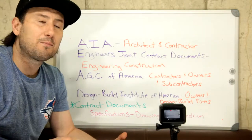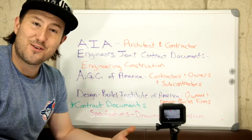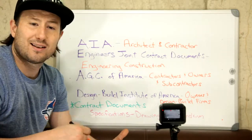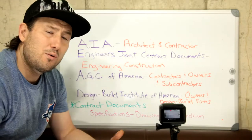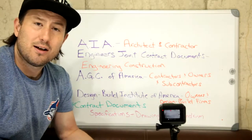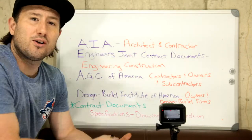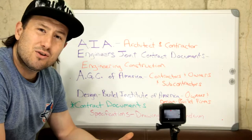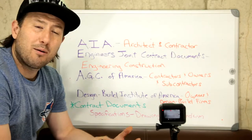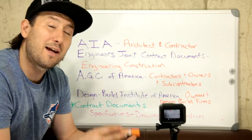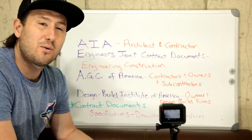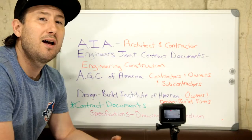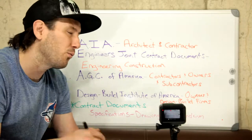This is the first video in the series. I'm going to be going over all the different contract delivery systems. My next video will be on the traditional design-bid-build model, and then I'll be going into contract management, design-build, P3 contracts, and BIM contracts. When I go into my contract management series, I might break that down into a few different videos because there are a couple of different ways you can go — like contract management at-risk — and it works a little differently.